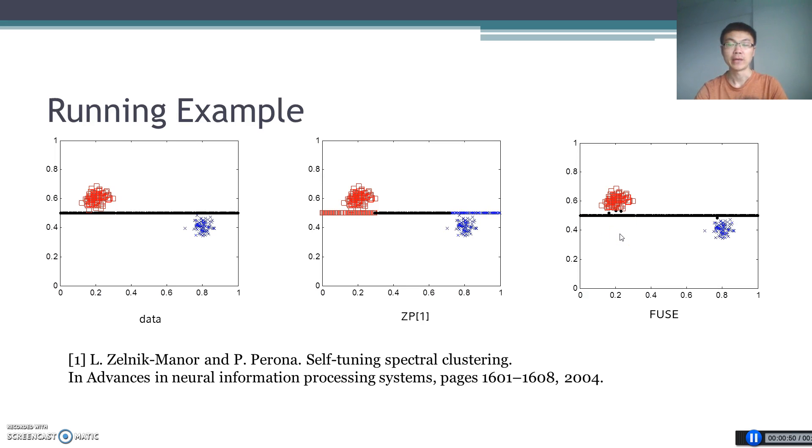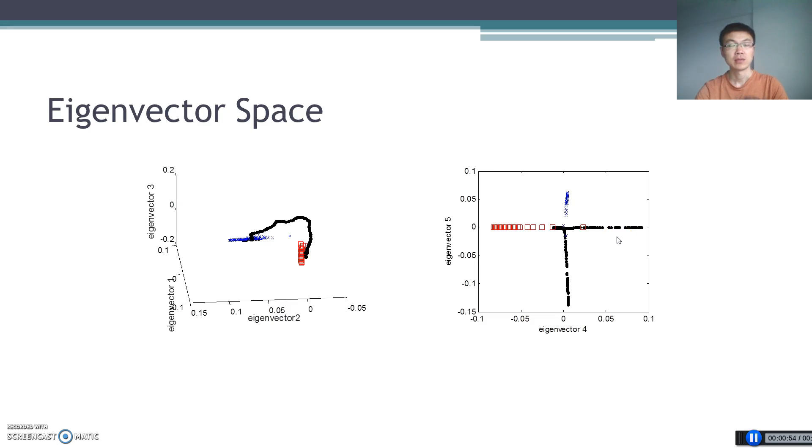So why does our fuse perform better? If we look into the eigenvector space written by ZP, this is an eigenvector space which contains the first three eigenvectors. Three clusters are connected.